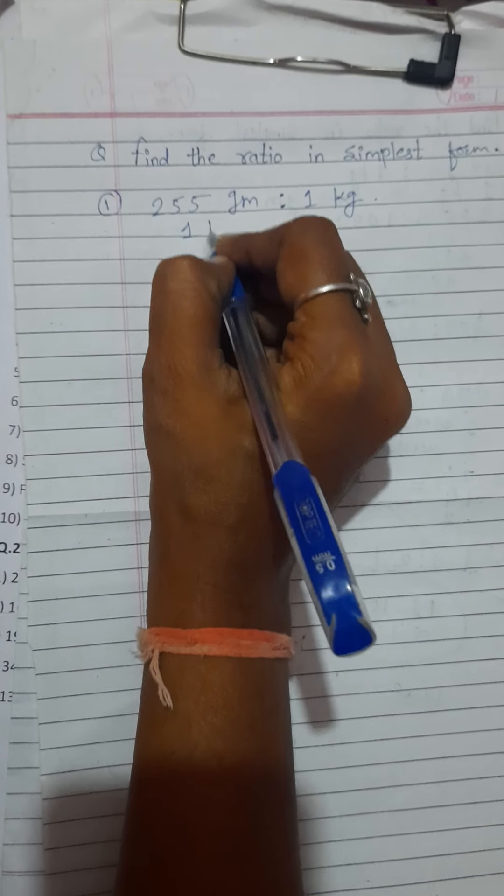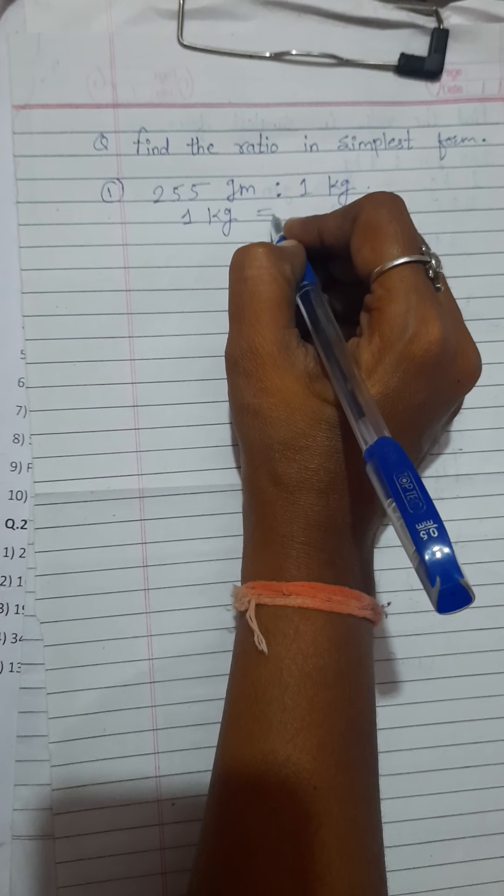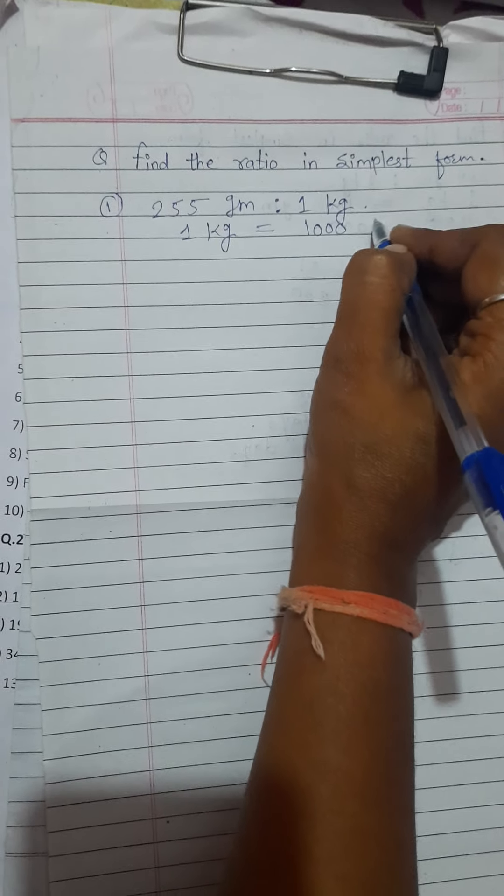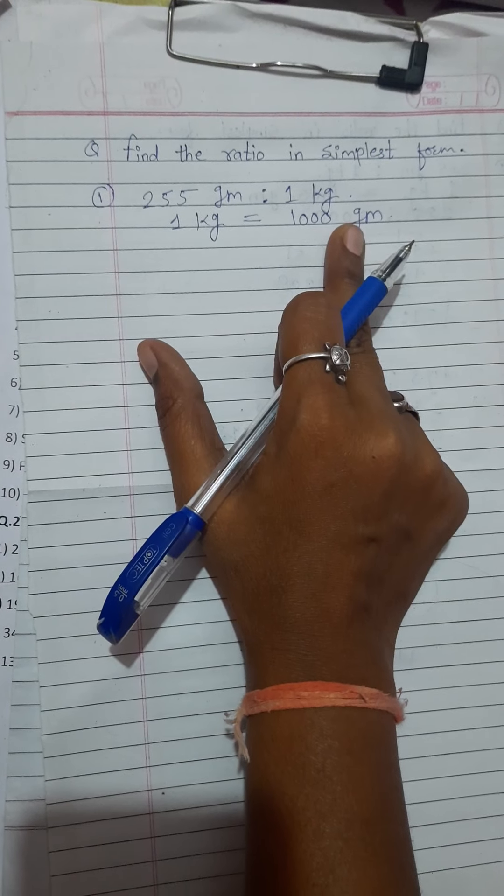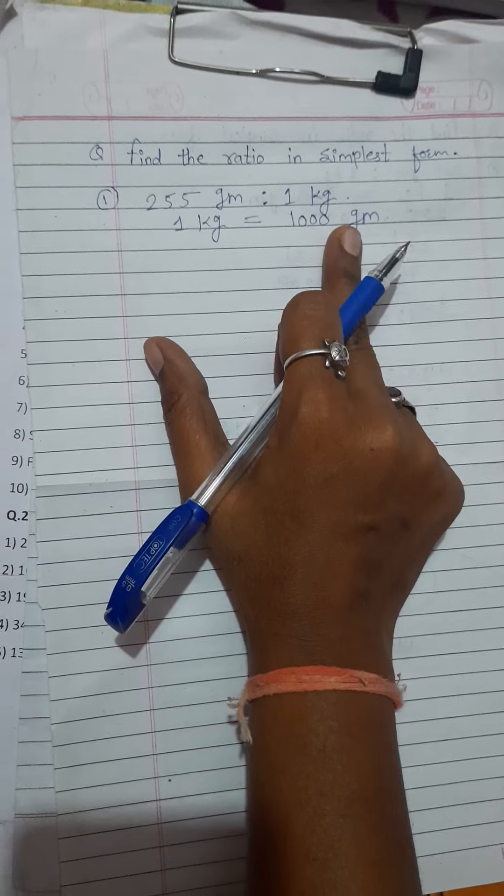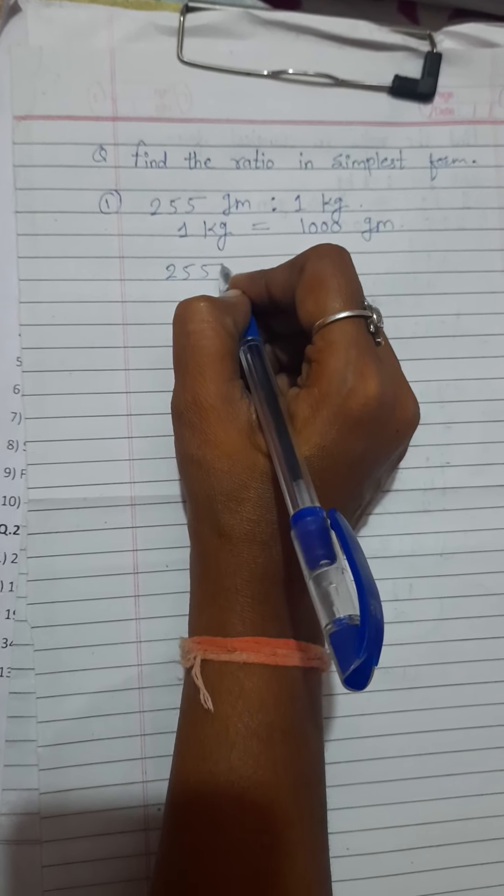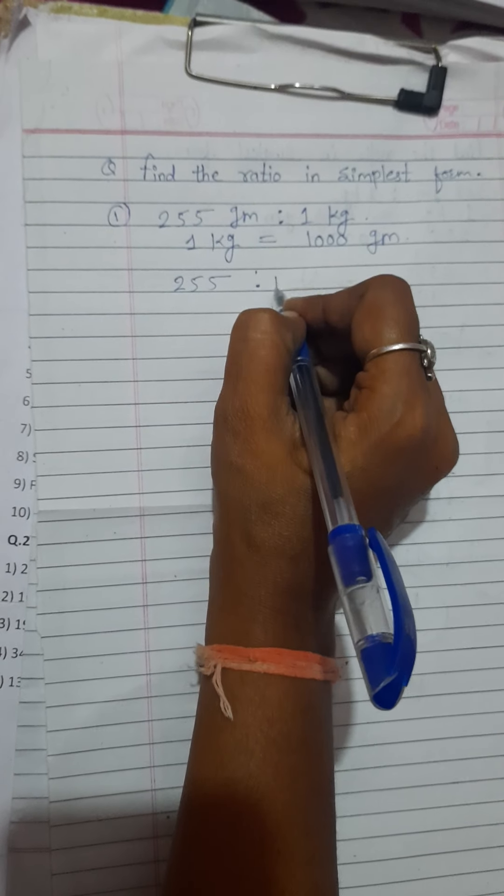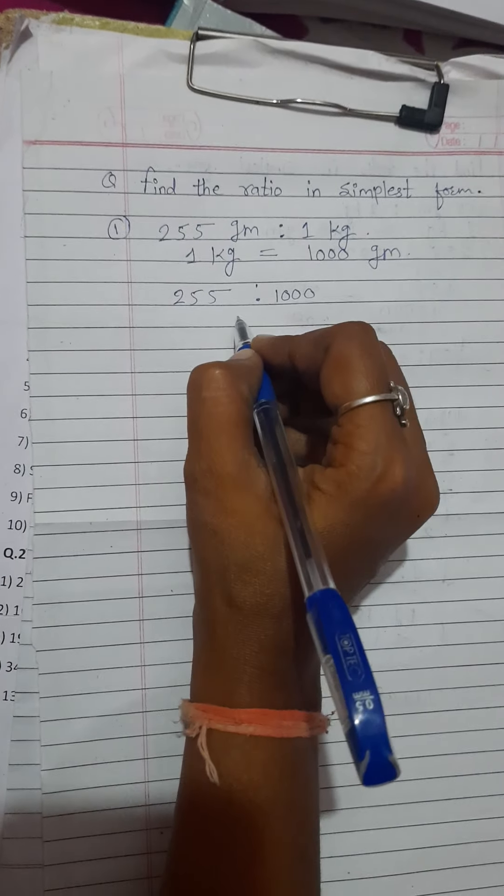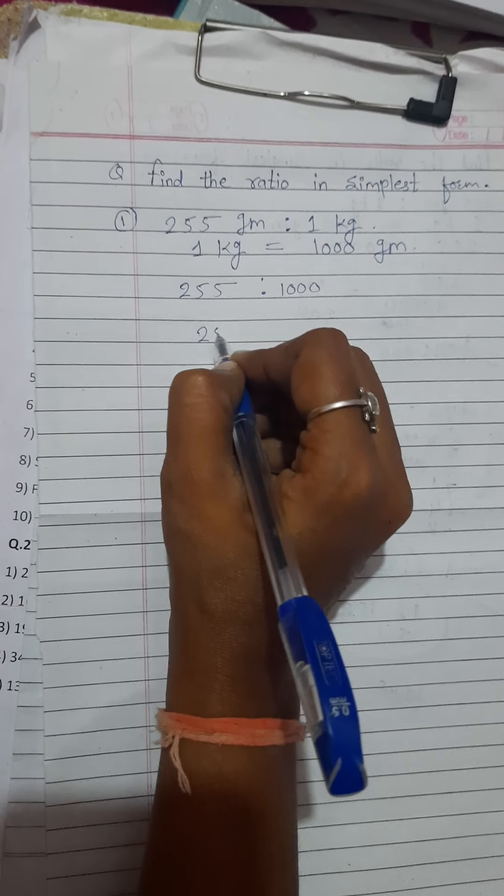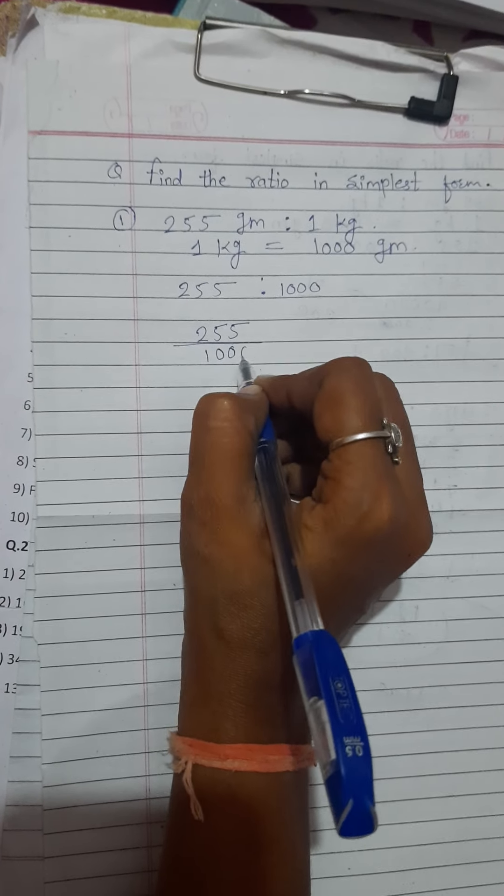How? 1 kilogram is equal to how many gram? Very good, 1,000 gram. 1 kilogram means 1,000 gram. Now just solve that. Write down here, 255 ratio 1,000. And just solve that. 255 divided by 1,000.